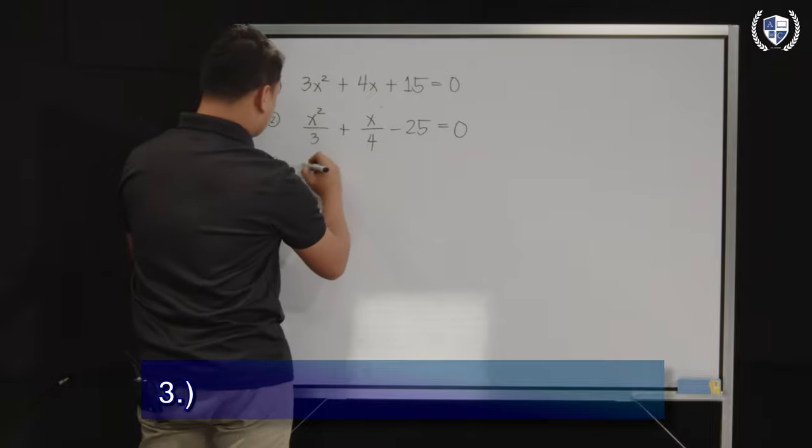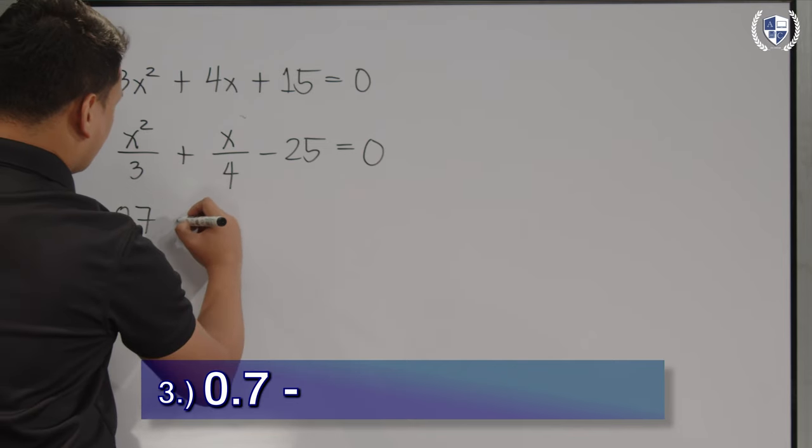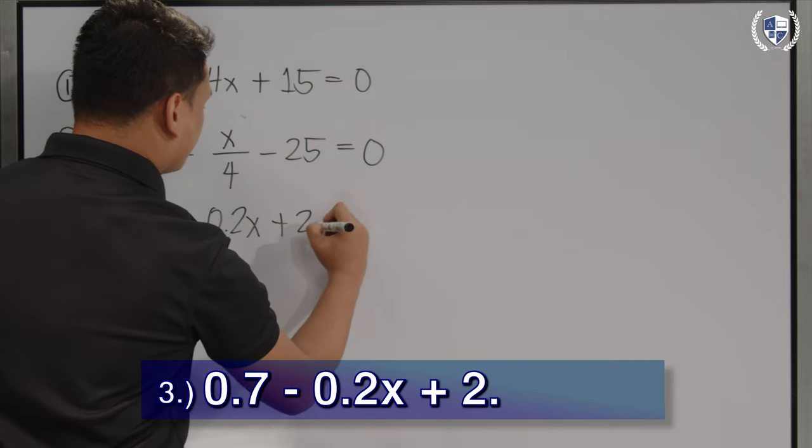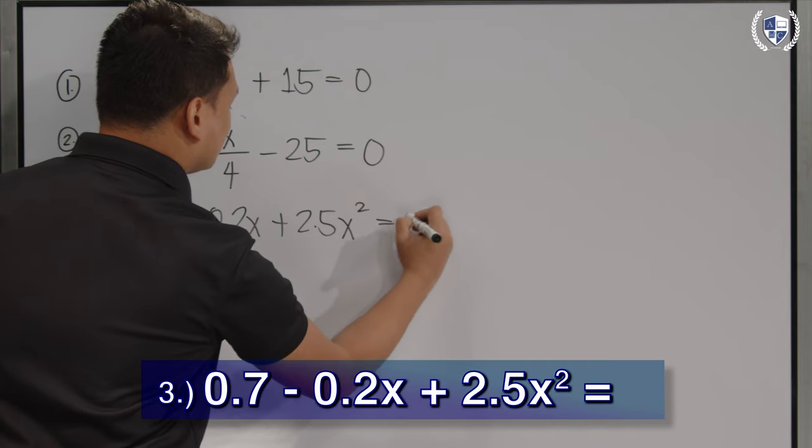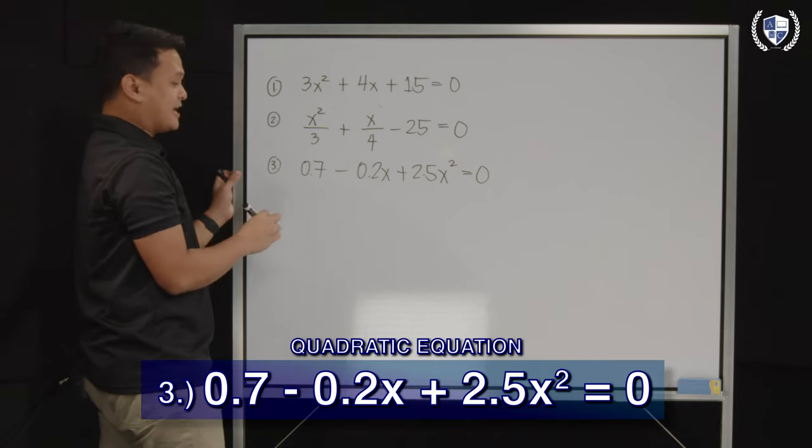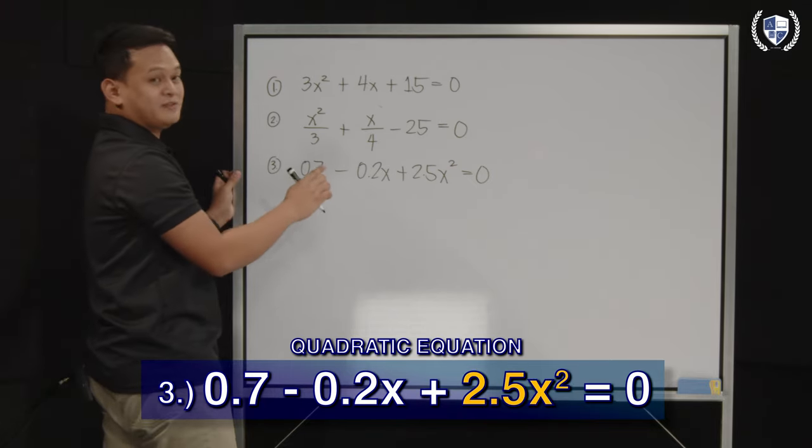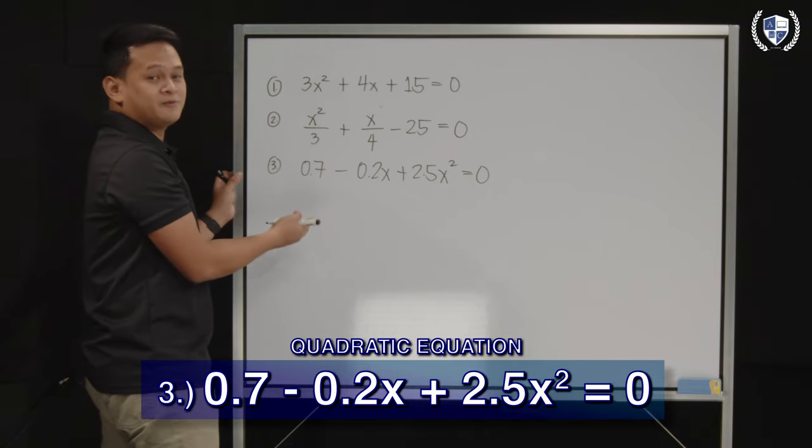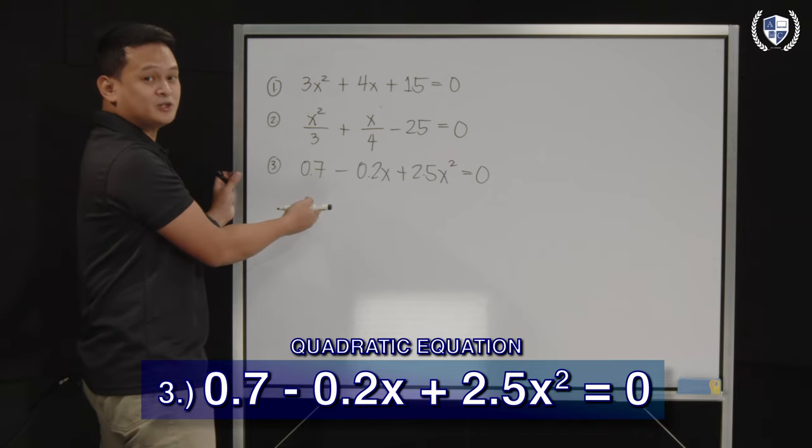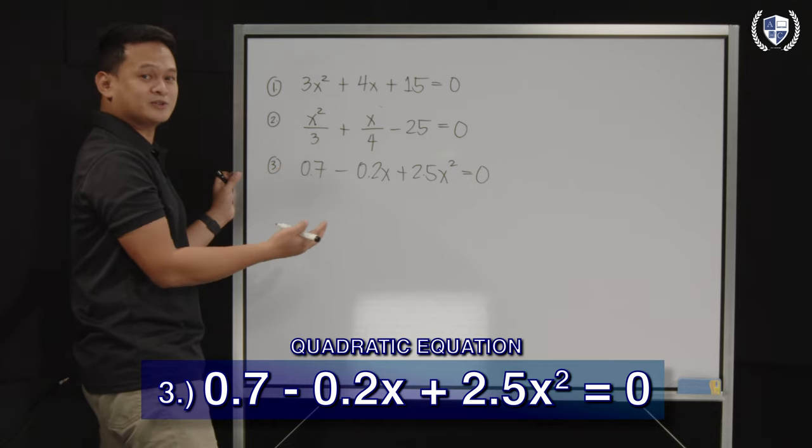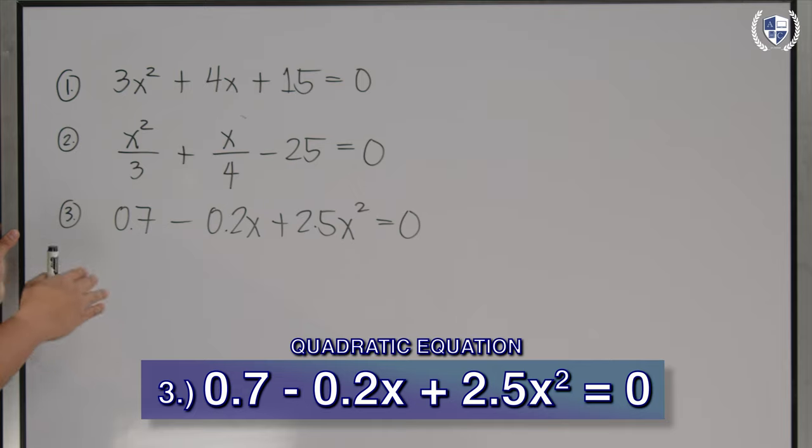The third, let's have another one. Let's say you have 0.7 - 0.2x + 2.5x² = 0. So, if you notice, it's not like our first two examples. The quadratic term 2.5x² is at the end. And it should not be a problem for us because we can actually rewrite this equation in another way later on, so you'll better understand why it's important that we write our quadratic equation in its standard form.